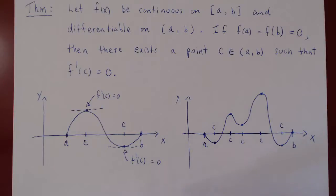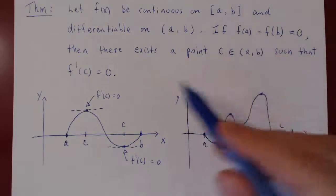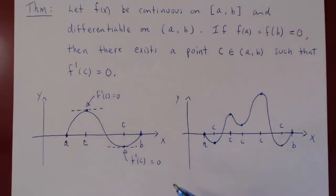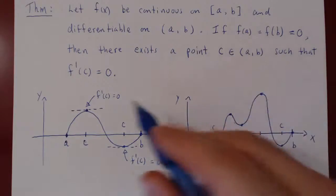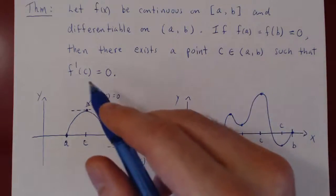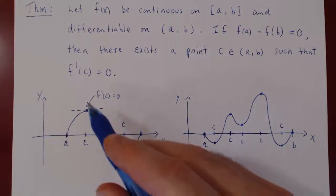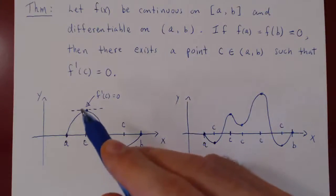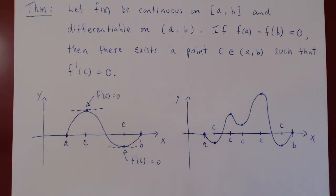And this will motivate the proof. We know where to look for the value of c where the derivative will be equal to 0 — we're going to look for a local maximum or a local minimum.